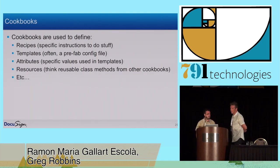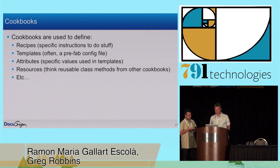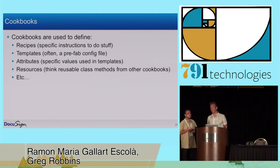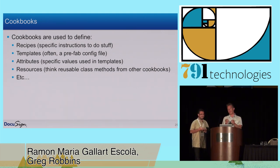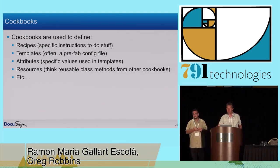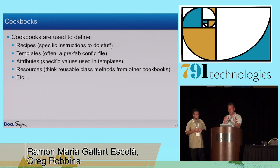So, cookbooks — these define the recipes, the specific instructions. A cookbook also uses templates. We've been using templates for configuration files — we have a precooked configuration file, like for Apache. The Apache config file is going to be more or less the same, except on different environments I may want to set different configurations: different amounts of memory, different paths, and so on. Those things that change from one environment or node to another I would set in an attributes file. So you can see there's quite a bit of configurability depending on how you want to set up and use it across different environments.